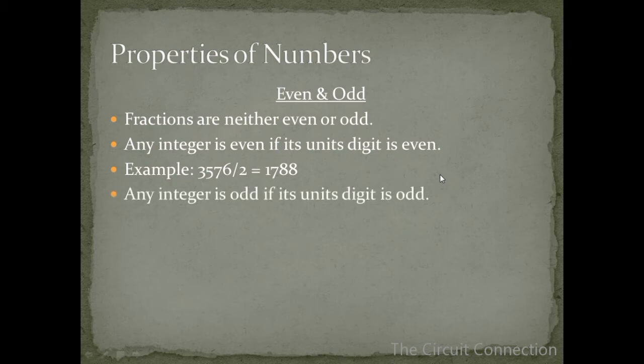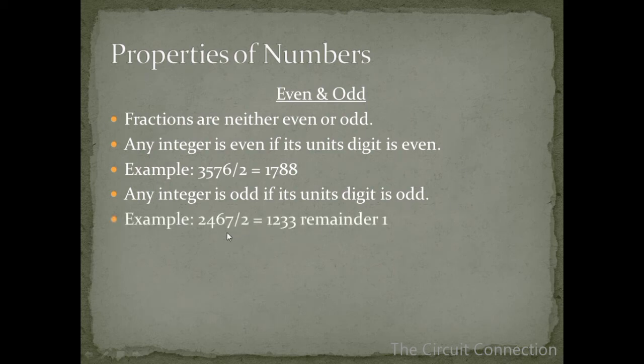Any integer is odd if its units digit is odd. So for example, 2467 over 2 is equal to 1233 and it gives us a remainder of 1.